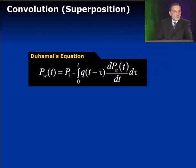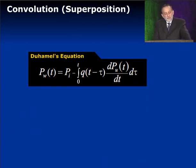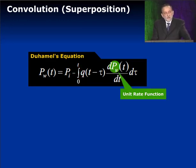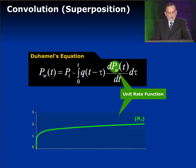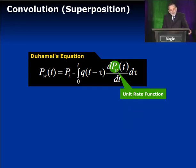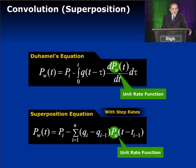Mathematically, this is called convolution or superposition. In mathematical books, it can also be called Duhamel's equation or the Faltung integral. In this equation, you have an integral — this is the unit rate function. The equation deals with continuously changing rates. If the rates are changing in a stepwise manner, as we do in most well testing, then the integration sign becomes a summation and we reformulate the equation. So this is our standard superposition equation.